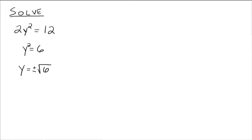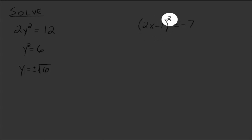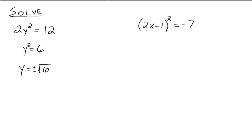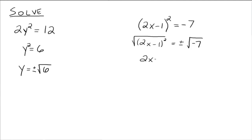Let's try another, slightly longer one. This again fits the idea that we have something squared equals a real number. We can literally take the square root of both sides. Taking the square root of 2x minus 1 squared equals, and we cannot forget the plus or minus, the square root of negative 7. The square root and the square undo each other, and we're left with 2x minus 1 on the left side.